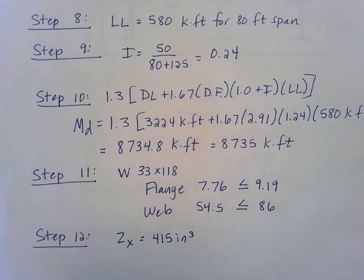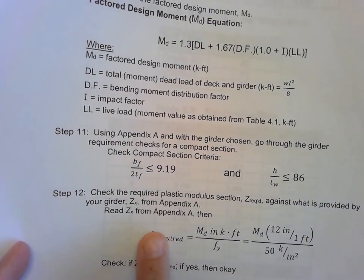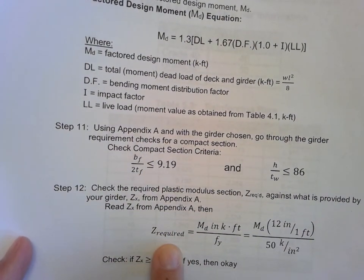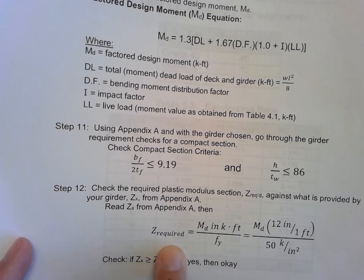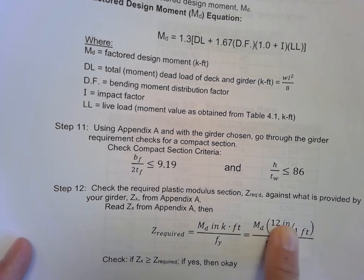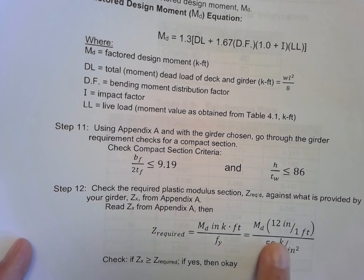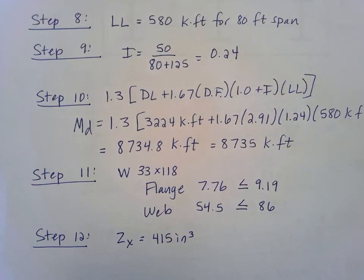My job now is to check and see if that's going to be enough for what I figured out for my factored design moment. We're on step 12. We read our Z sub X, and now we're going to check it against what we really need based on the factored design moment we calculated. We'll figure out that Z required by taking that factored design moment in kip feet, convert it to kip inches, and then divide it by the yield strength of steel, which we used in our step one, was given to us as 50 kips per inches squared.